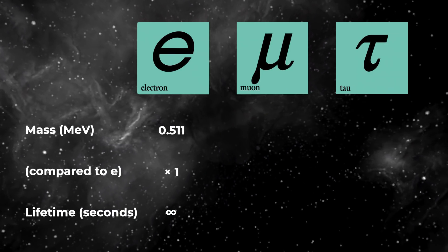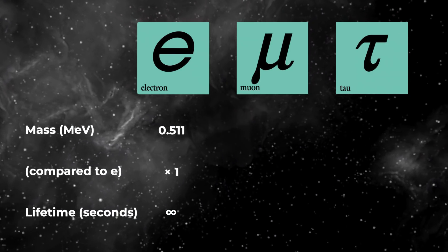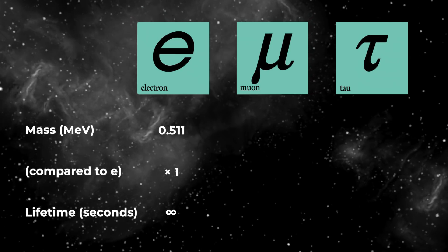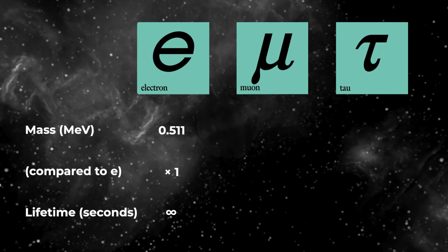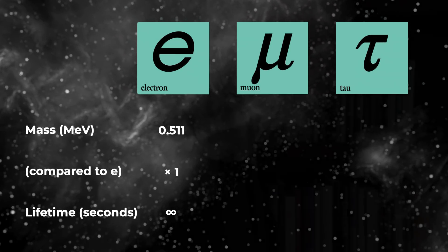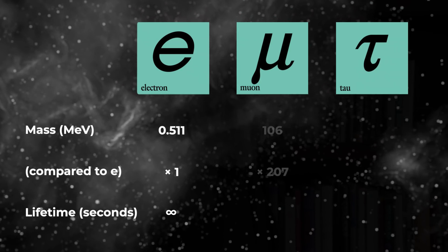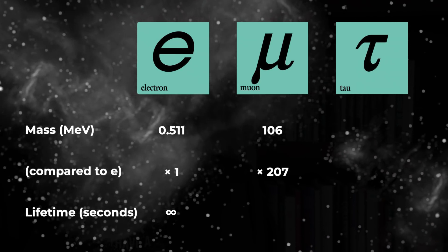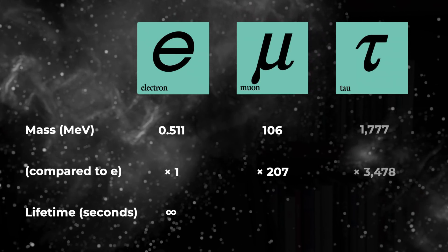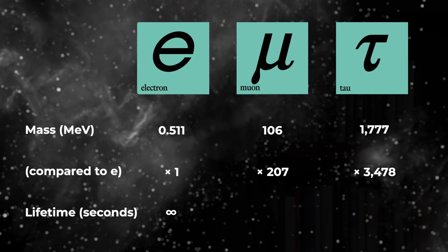There are three charged leptons, all with the same charge as the electron. These leptons are called the electron, the muon, and the tau lepton. Basically, you can think of them as cousin particles of increasing mass. The muon is about 207 times heavier than the electron, while the tau lepton is about 3,500 times heavier than the electron.